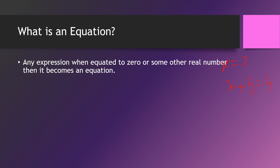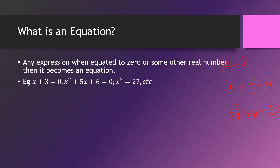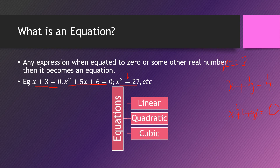For example, x plus 3 equal to 0, x square plus 5x plus 6 equal to 0, x cube equals 27 — these are all equations. The left part is an expression; when an expression is equated to something it becomes an equation. Equations can be of various types; we'll focus only on three: linear, quadratic, and cubic.